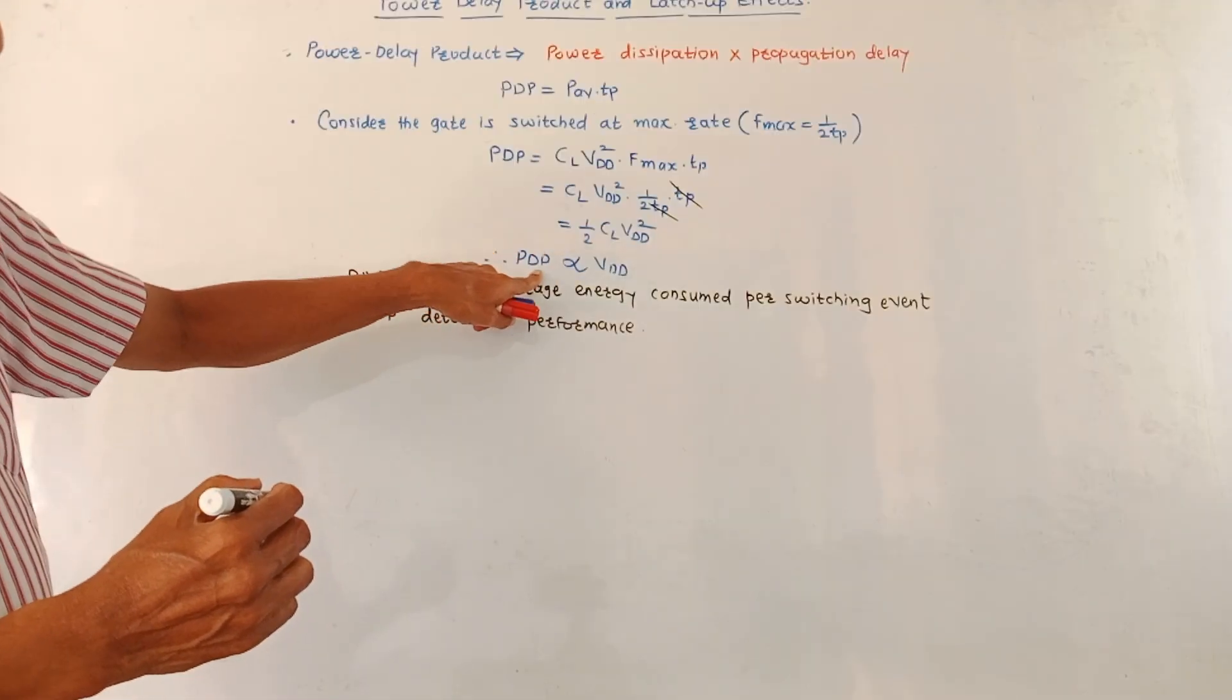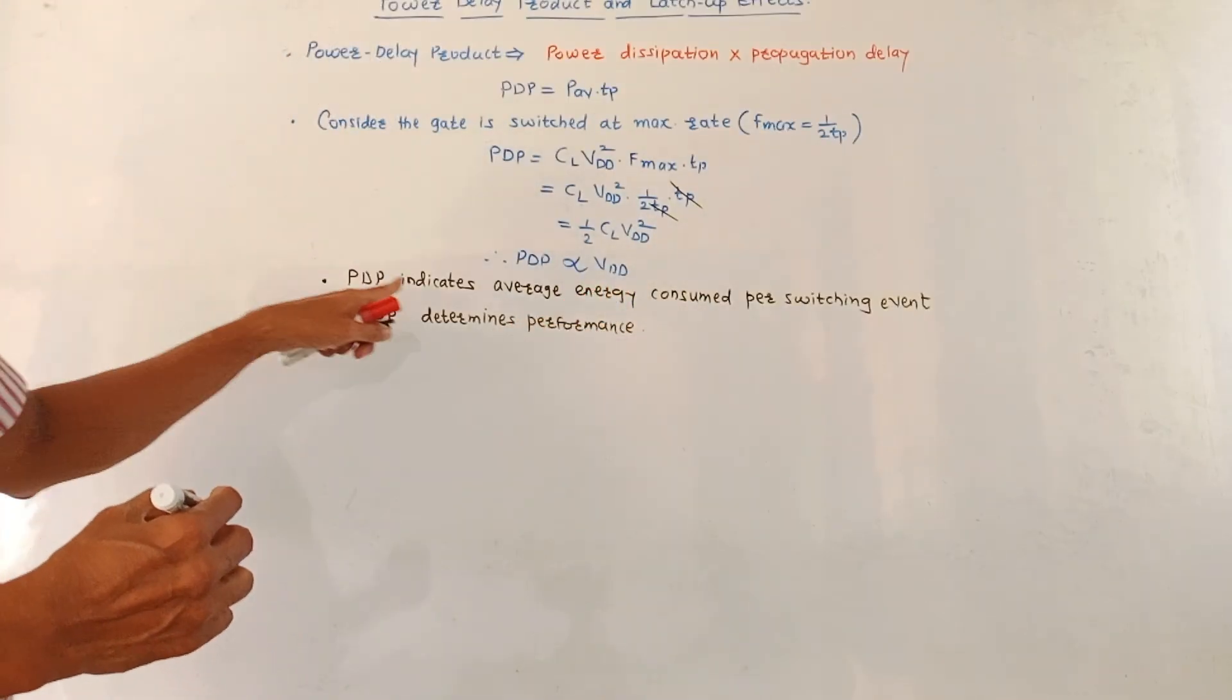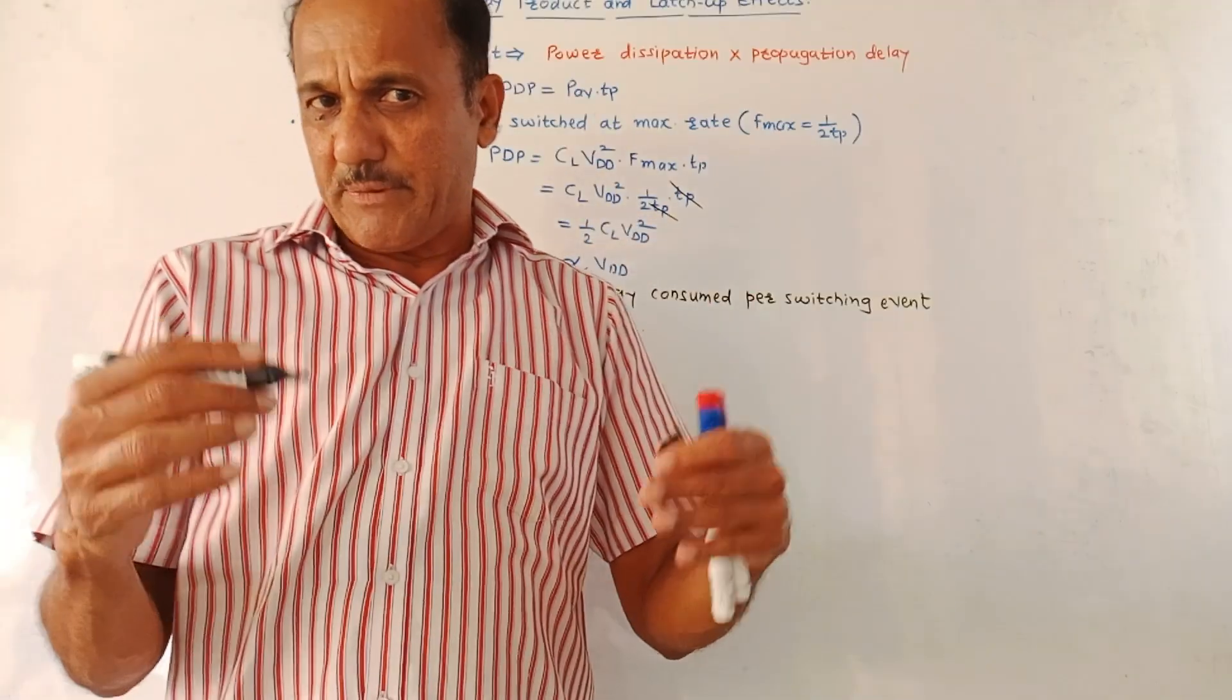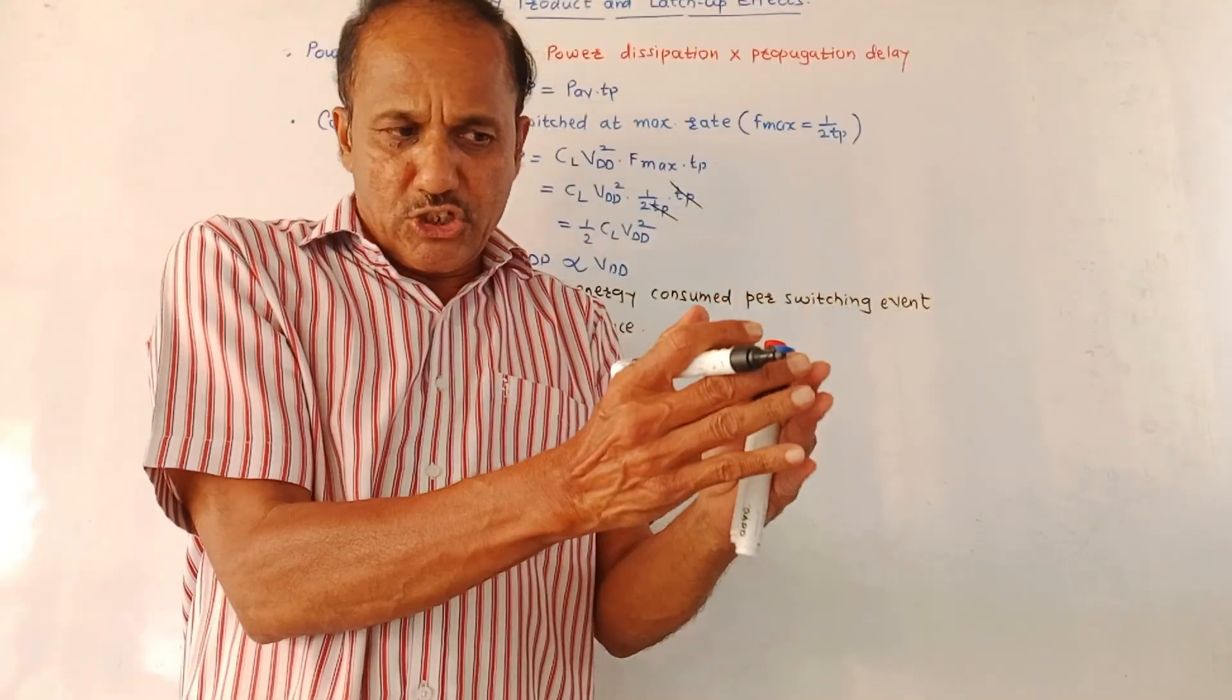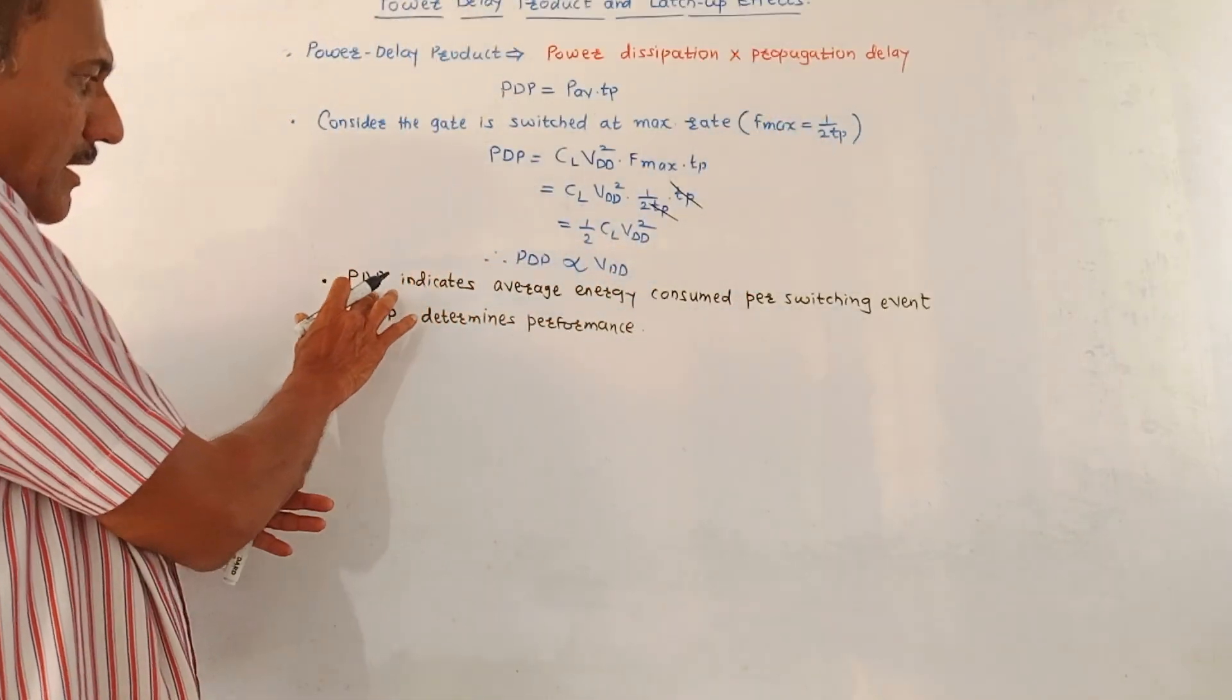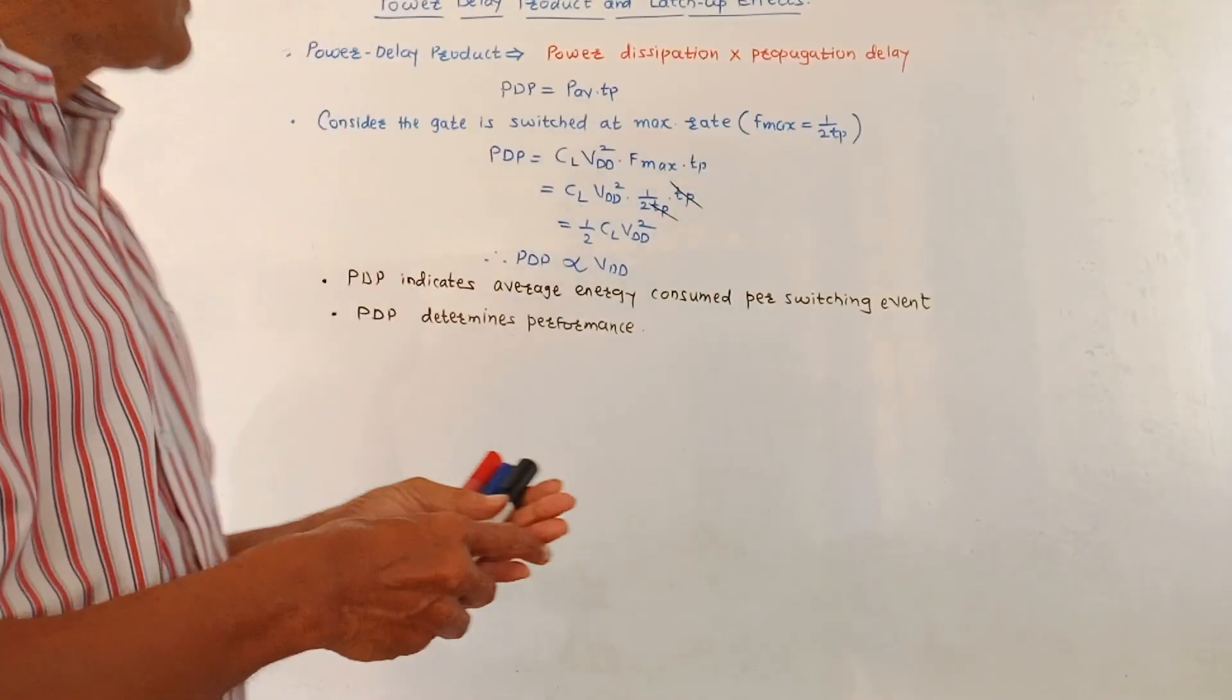It indicates that power delay product PDP is directly proportional to the supply voltage VDD. This PDP gives an idea about the average energy consumed per switching event, that means per transition. Per switching event means if the transition is from 0 to 1 or 1 to 0, then how much amount of average energy is consumed. That idea is obtained from this term PDP. And main use of the PDP is to determine the performance of the given circuit.